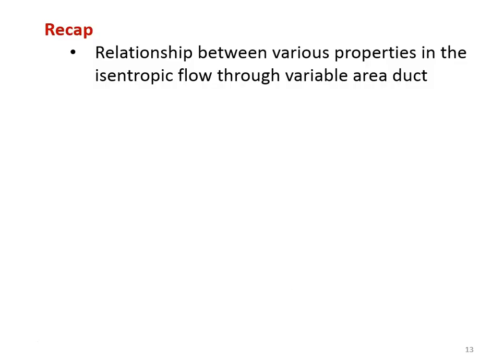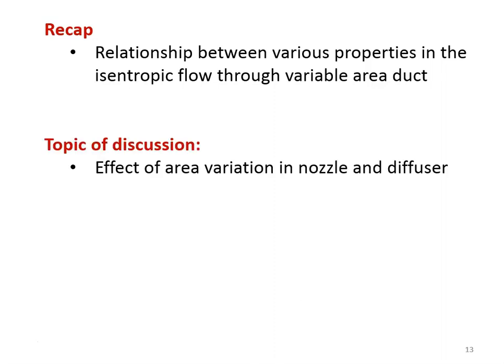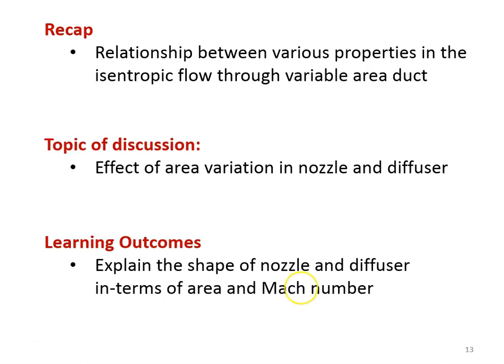We recap from the earlier lecture. In the previous lecture, we discussed the isentropic flow through variable area duct. The variable area duct has two types: one is nozzle, another one is diffuser. In the earlier lecture, we discussed the relationship between various properties in the isentropic flow through variable area duct. In this lecture, we will be discussing the effect of area variation in nozzle and diffuser. The learning outcome: at the end of the lecture, the student will be able to explain the shape of the nozzle and diffuser in terms of area and the Mach number.